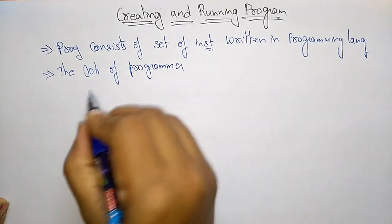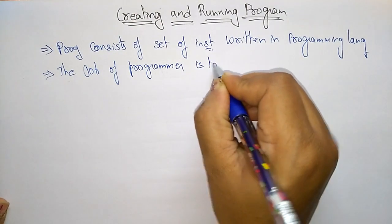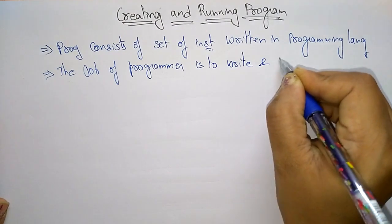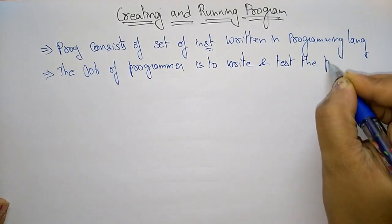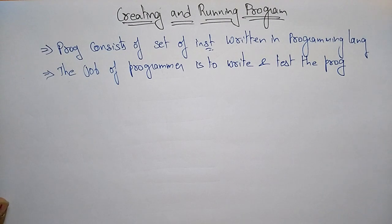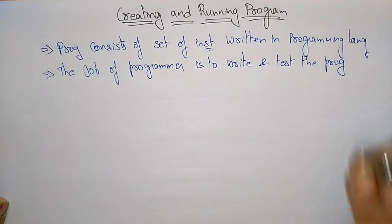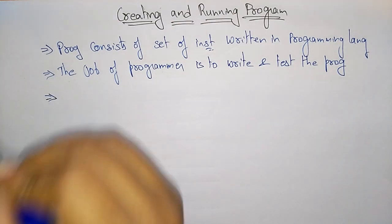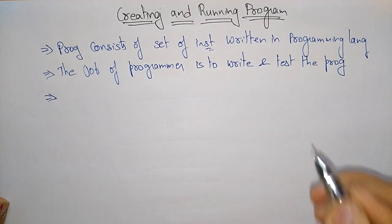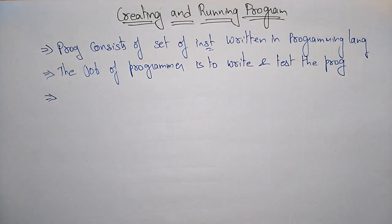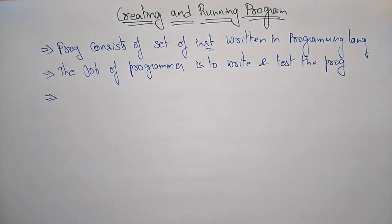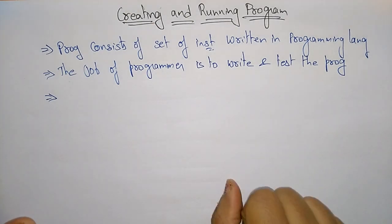The job of the programmer — the person who writes the program — is to write and test the program. There are four steps for converting a C program into machine-level language. The system can understand only machine-level language, but the programmer writes the program using English-like alphabets and cannot directly understand machine language.